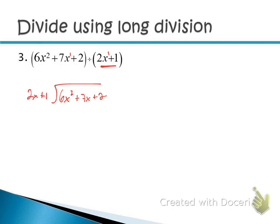To start the long division process, figure out what you can multiply 2x + 1 by to get it into 6x² + 7x. Use the first-term trick: divide the first terms out. How many times will 2x go into 6x²? Divide 6x² by 2x — 6 over 2 reduces to 3, and x² divided by x gives x, so 2x goes into 6x² exactly 3x times. Put 3x on top of the box, stacking like terms — so 3x goes over the 7x.